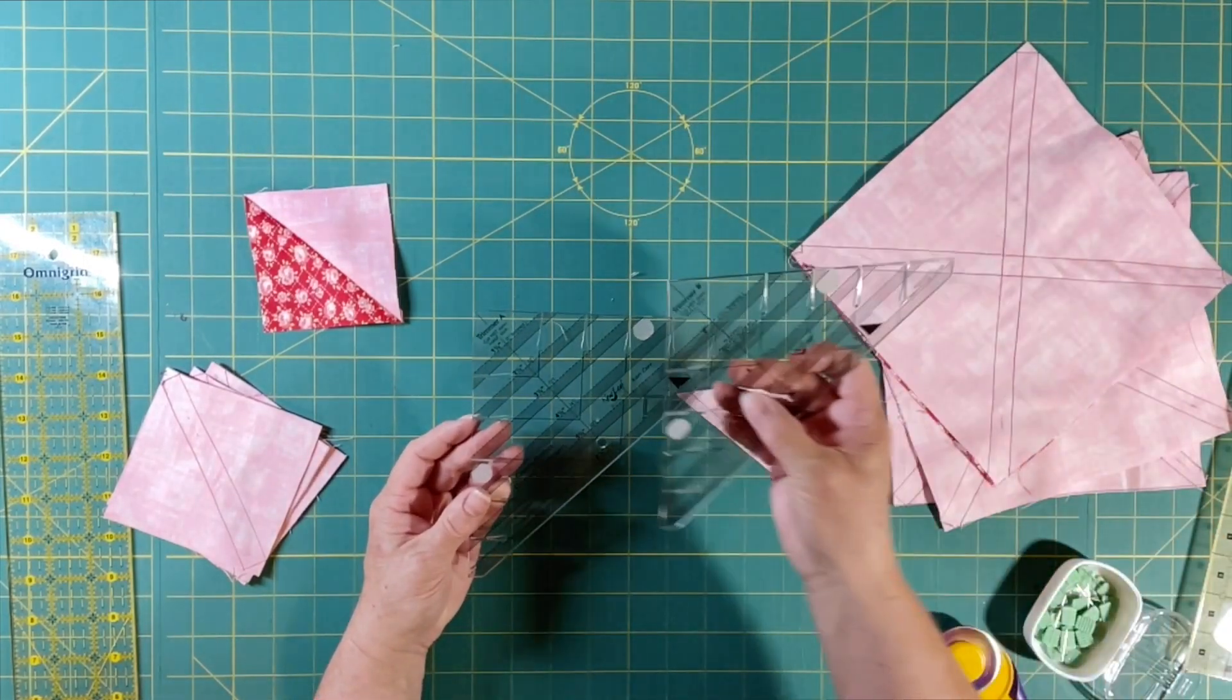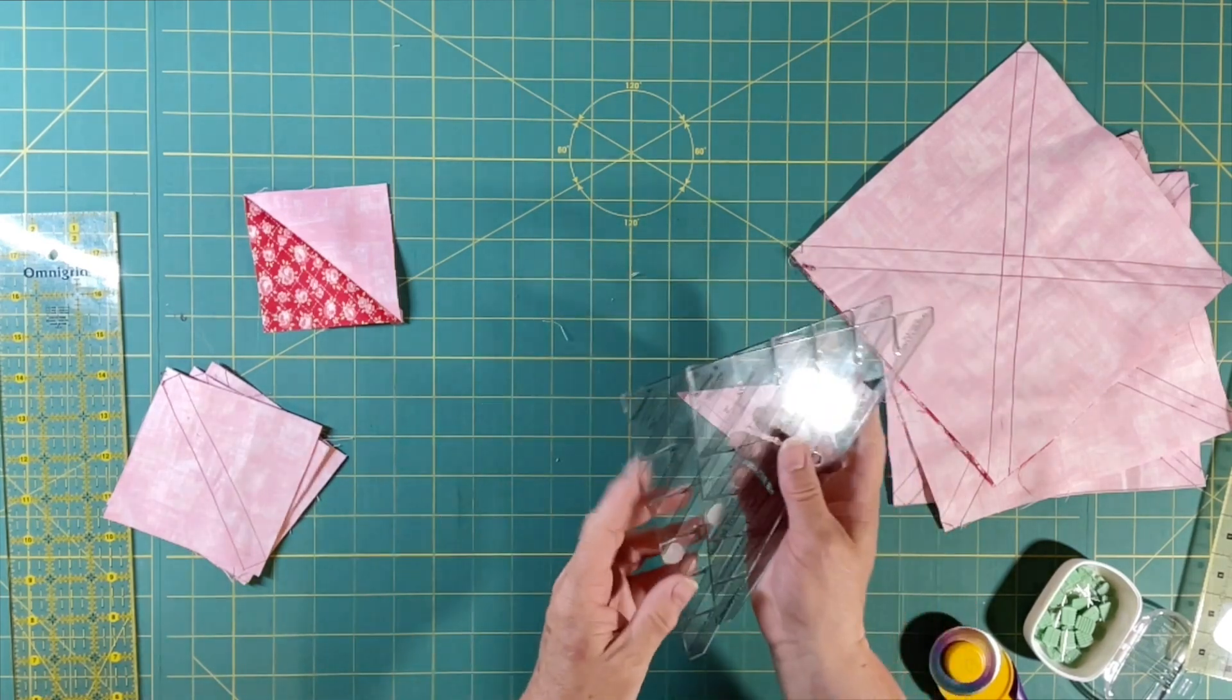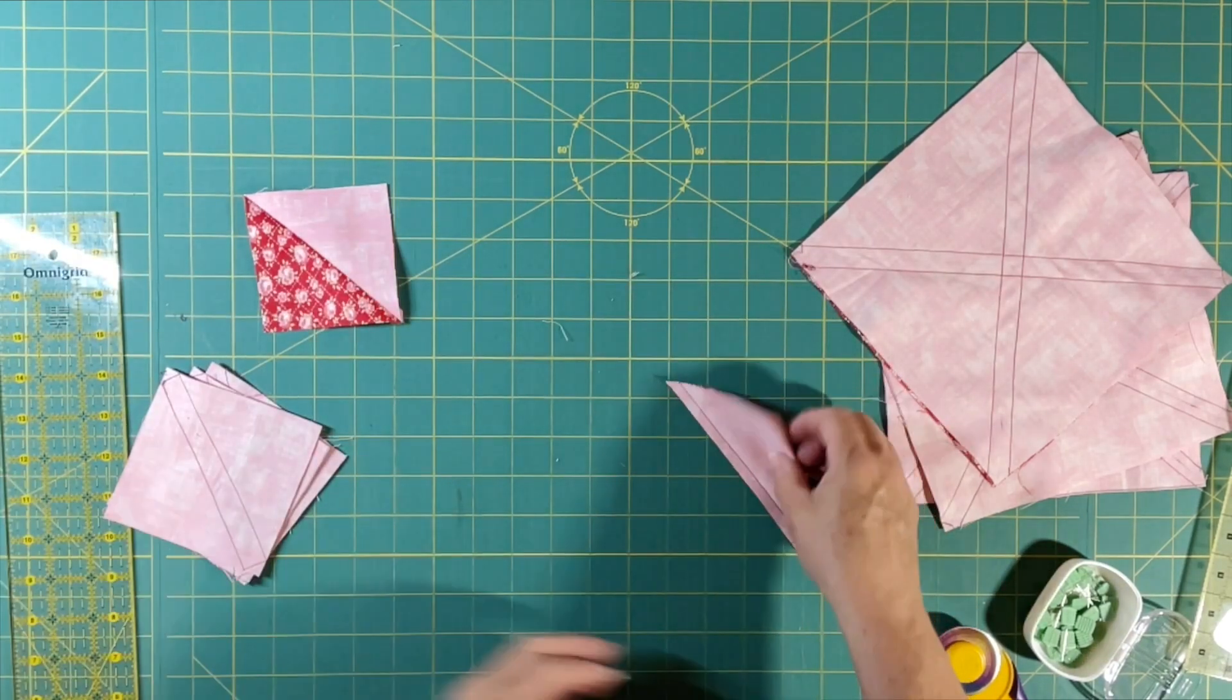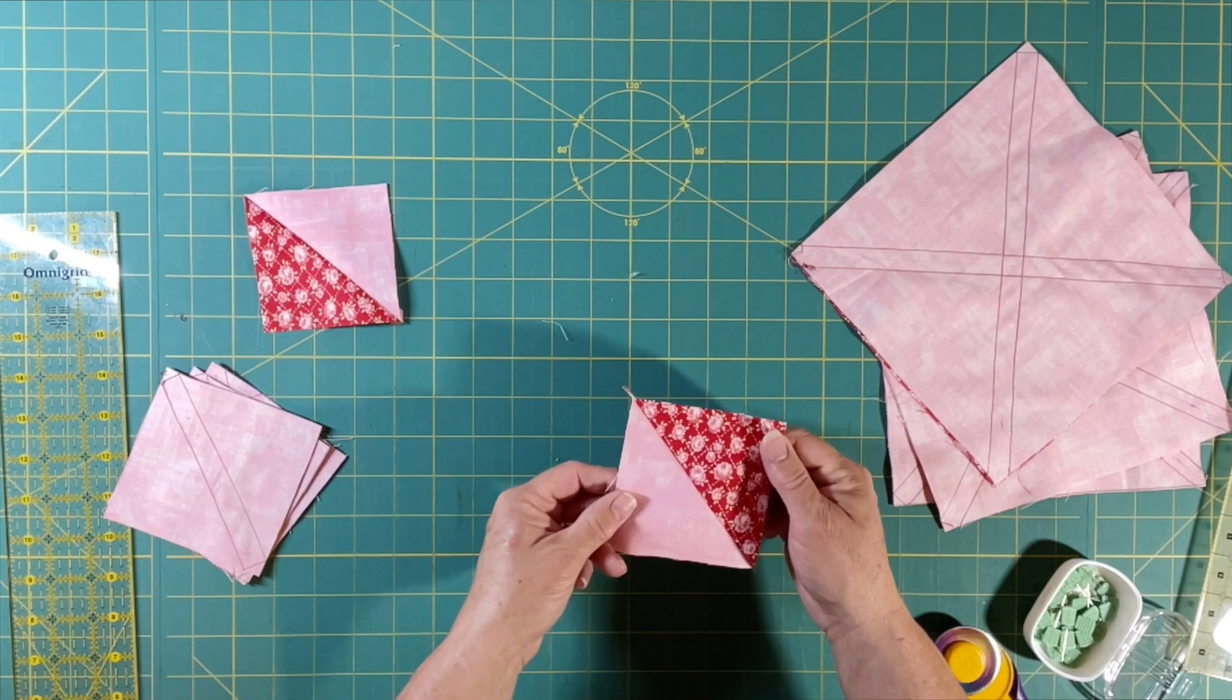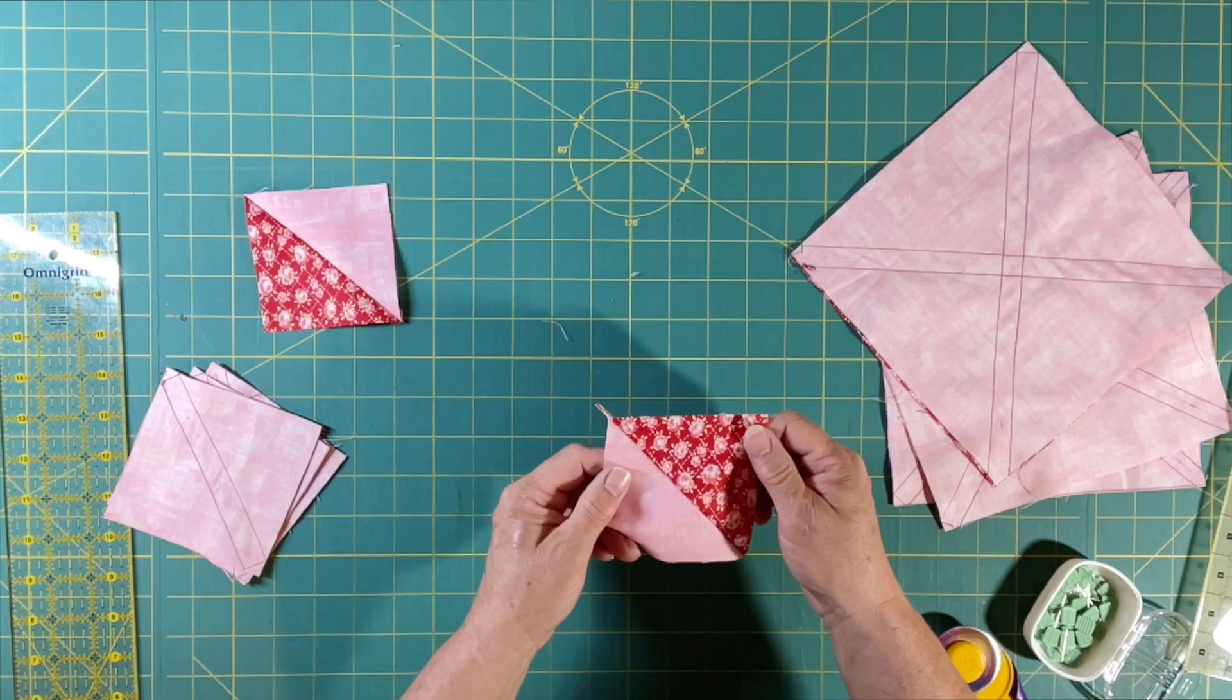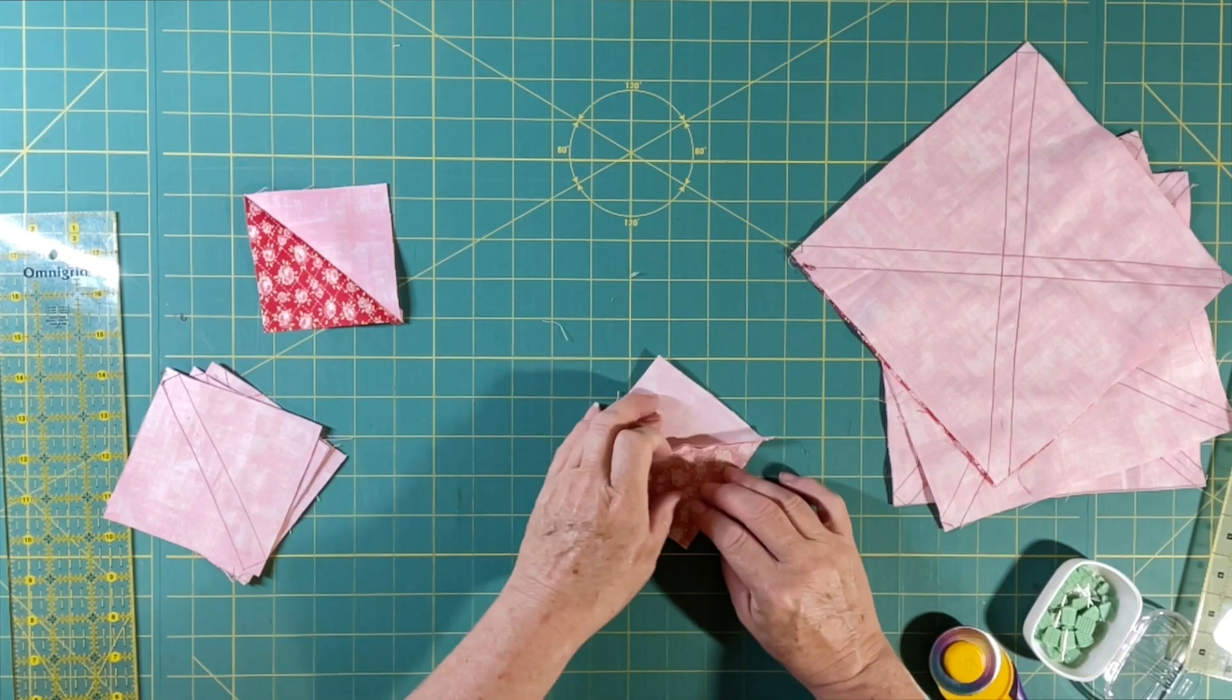But I also want to show you how to square one up if you don't have one of these fancy-dancy rulers. Now these come in two different sizes, they come in whole sizes and half sizes. So if you don't have that, then I'll show you how to trim up an open half square triangle.